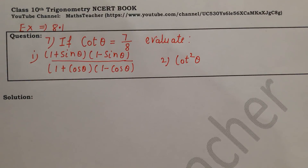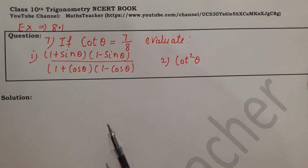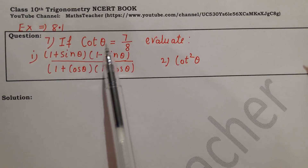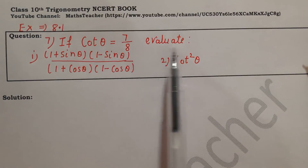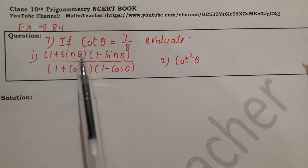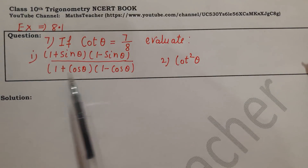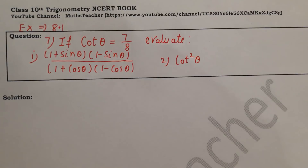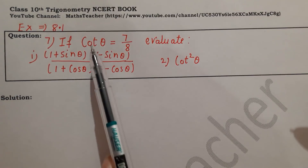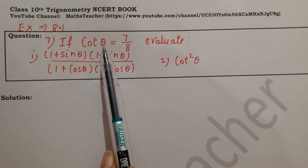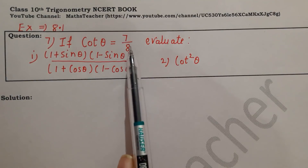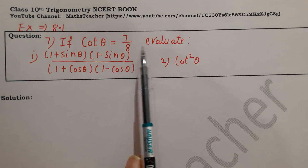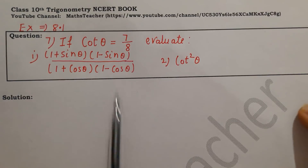Hello viewers, welcome to my channel. I am Rashmi, a math teacher. Today we will solve Exercise 8.1, Question Number 7: if cot θ = 7/8, then evaluate two parts. First part: (1 + sin θ)(1 - sin θ) divided by (1 + cos θ)(1 - cos θ). If you are given any trigonometric value in a fraction, we complete the right angle triangle and solve it.